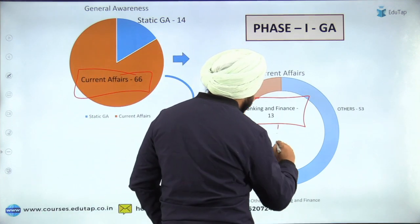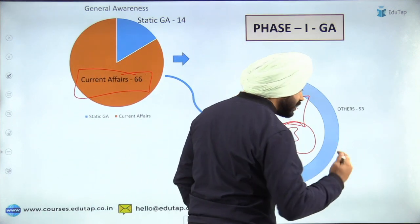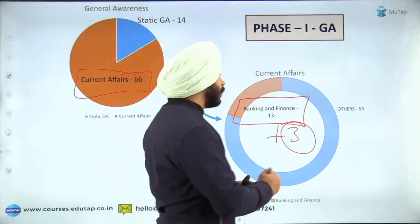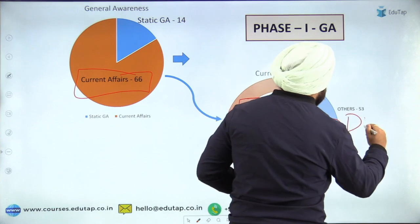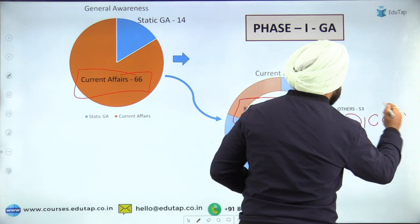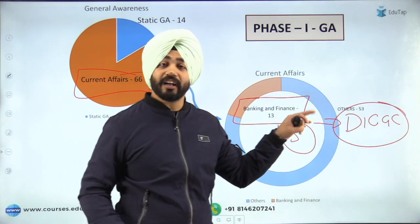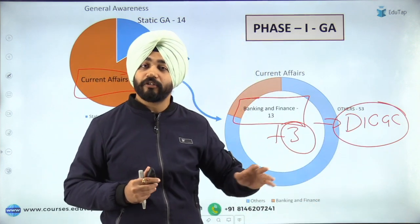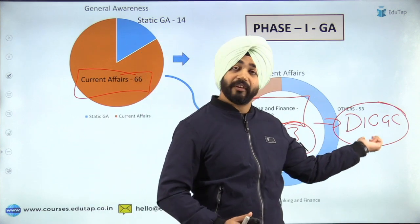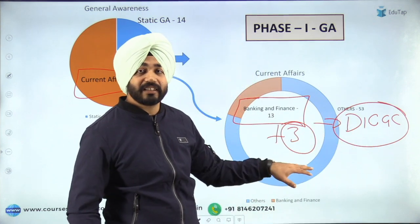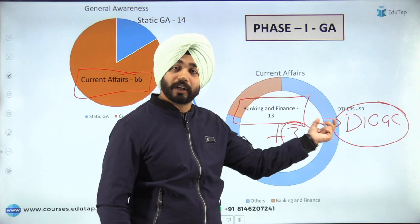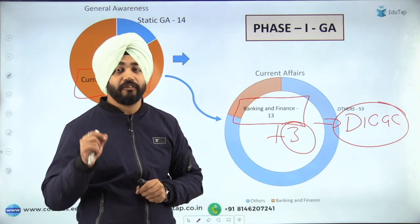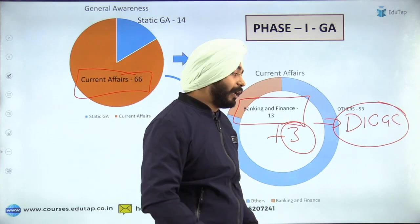Along with that, there are three questions which were static questions but again being derived from current affairs. For example, DICGC — a question was asked about DICGC because it was seen in the news a lot during the RBI exam period. That's why a question was framed from DICGC. So finance current affairs is important not just directly but also indirectly, as questions on your examination are picked from finance current affairs.